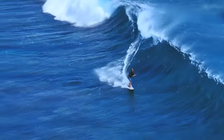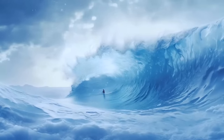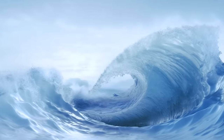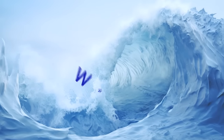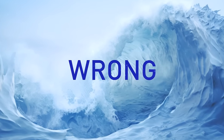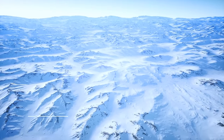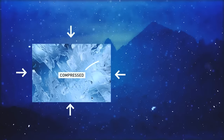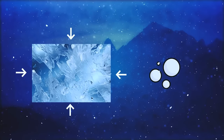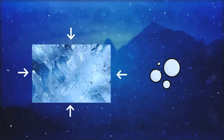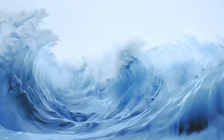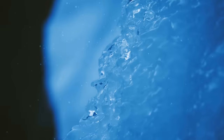Imagine surfing a perfect wave when it suddenly freezes. Well, you can see mind-boggling frozen waves in Antarctica. These waves occur when the ice gets compressed and the ever-increasing pressure squeezes the air bubbles out of it. As for the beautiful blue color, it's the result of the ice melting and refreezing.